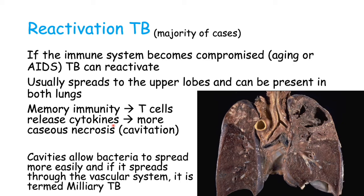However, this time it will lead to more necrosis and more formation of granulomas. Now it has the tendency to cavitate — to form cavities. As we can see in this image, there is a very large cavity in the upper lobe, which looks different from the surrounding lung tissue. These cavities allow bacteria to spread more easily, and if the infection spreads through the vascular system, it has the potential to infect pretty much anywhere in the body. This is termed miliary TB.